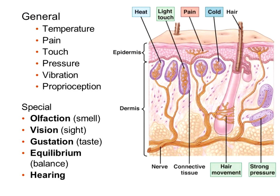General receptors are temperature, pain, touch, pressure, vibration, and within your muscles, proprioception. Our General Senses have a large population in our skin, so some of this information we'll be hitting back on from Chapter 5, which was our integumentary system.